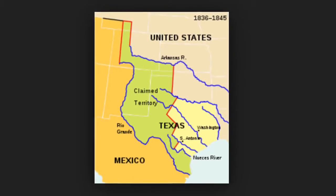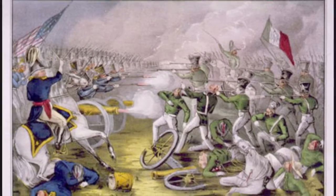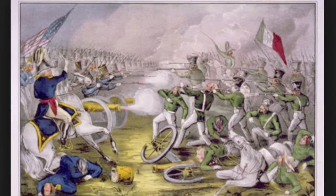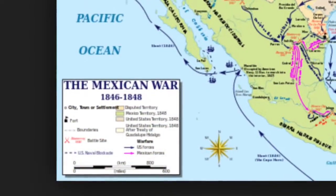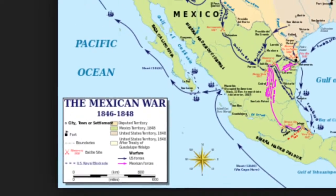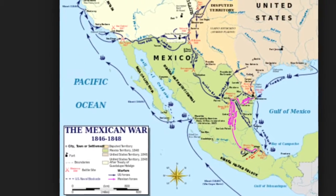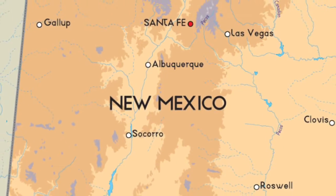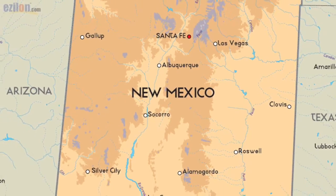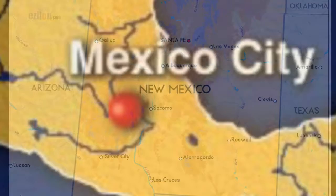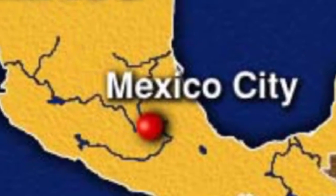The war consisted of three parts that President James K. Polk and General Taylor worked together to create. Part one: American troops would force Mexicans out of the argued border and take over the land of Texas. Part two: the troops would seize New Mexico and California. Part three: American troops would capture Mexico City, the capital of Mexico.